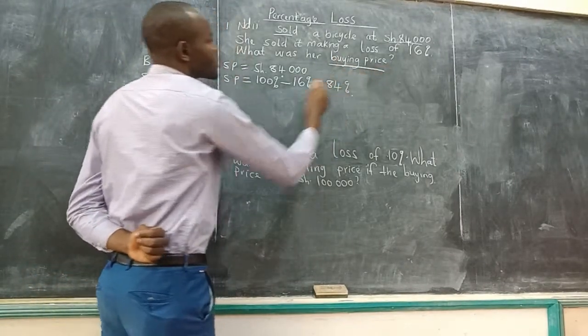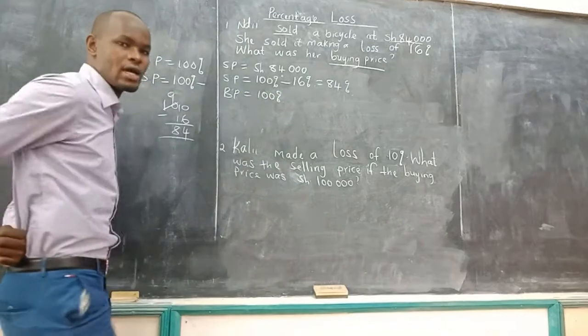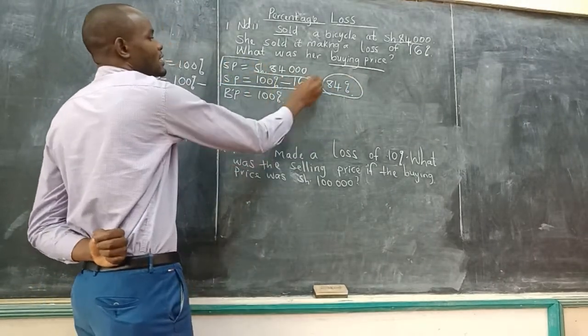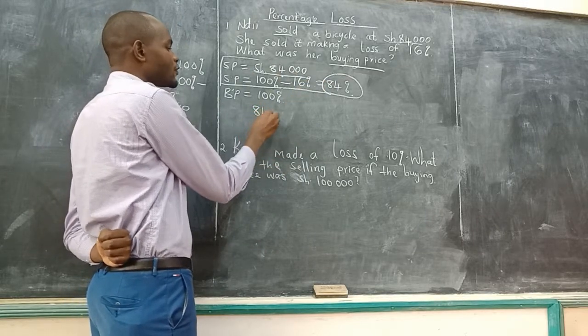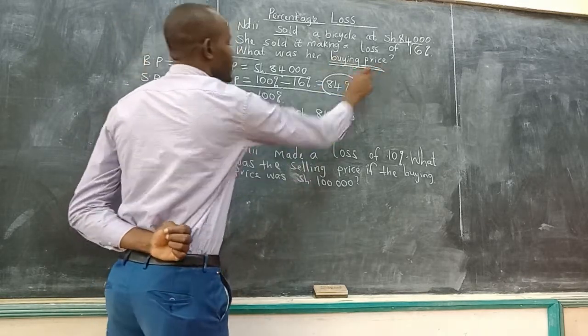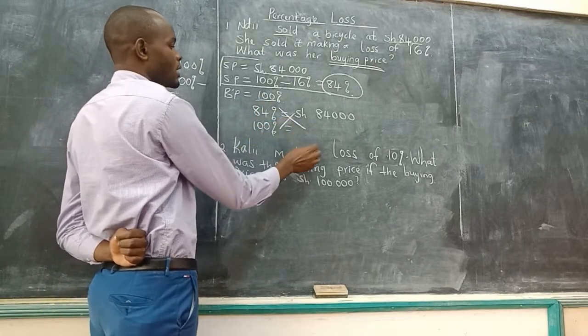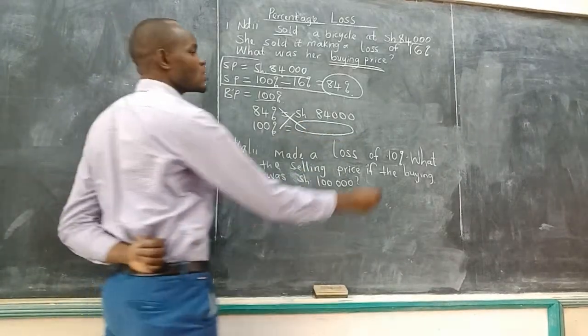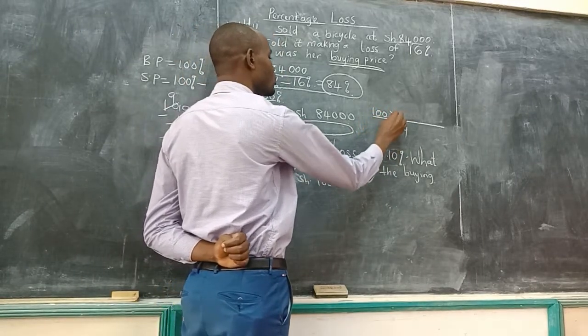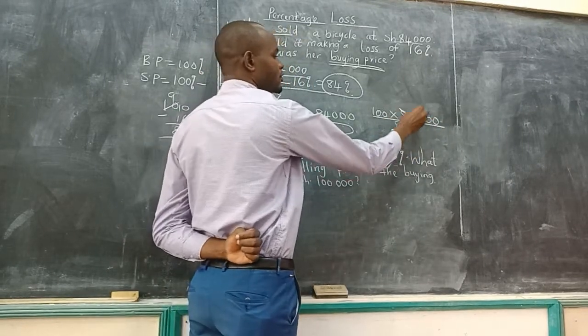84%. Then the question is talking about what was the buying price. The buying price in percentage is 100% before you make loss. You can see 84% is equivalent to 84,000. So 84% is equivalent to 84,000 shillings. What about the buying price which is 100%? Cross multiply. The number cross multiplied to nothing will be below. So 84% times buying price equals 100 times 84,000, by 84, by 1.